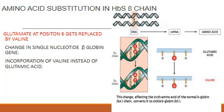What is the amino acid substitution in the case of hemoglobin S, that is the beta chain of hemoglobin? Glutamate at the sixth position gets replaced by valine. This is due to a single point mutation in the beta globin gene. As you can see in the figure, the codon GAG, which codes for glutamic acid, has been replaced by GUG because of the point mutation. Instead of glutamic acid, valine gets incorporated at the sixth position.